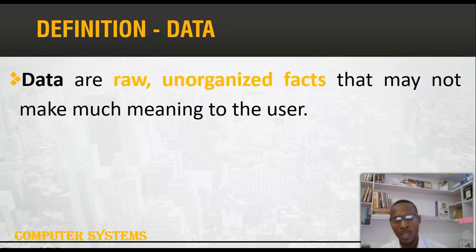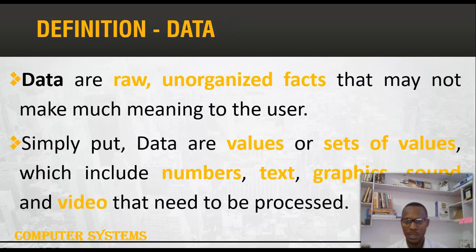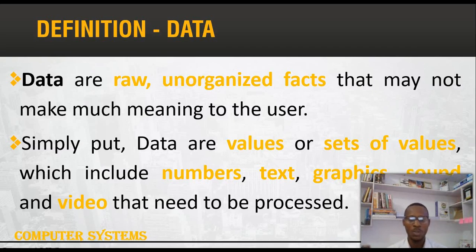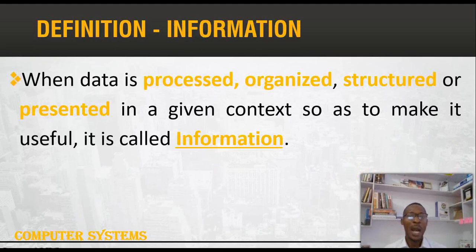Now let's look at what data actually is. Data, as user input, can be known as the raw facts that may not make much meaning on their own. In simple terms, data are just values or a set of values that include numbers, text, graphics, and videos that need to be processed. For example, you can create a video and need to edit it — that is passing through the processing stage. We also have numbers we want to add — two or three numbers — these can be data to get the desired output.